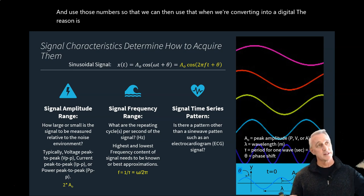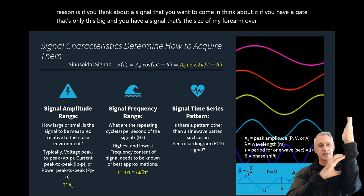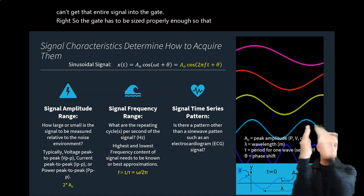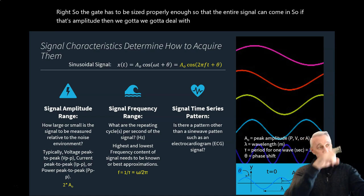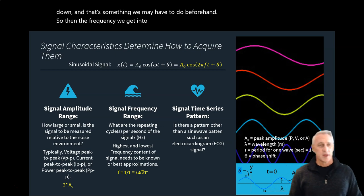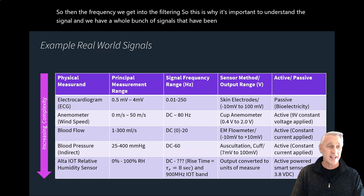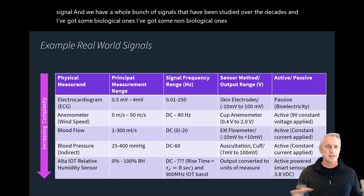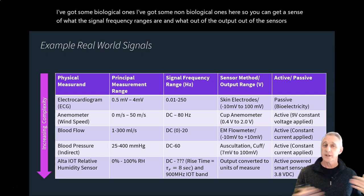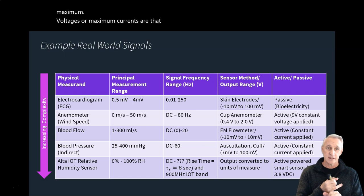Think of it like a gate: if the gate is only so big and your signal is larger, the signal gets clipped. The gate must be sized so the full signal fits through. Similarly, we need to understand the frequency range. For example, an ECG signal ranges from negative 10 mV to 100 mV. When acquiring it, you want your system capable of acquiring 100 mV or more, with a little buffer so the signal isn't cut off.